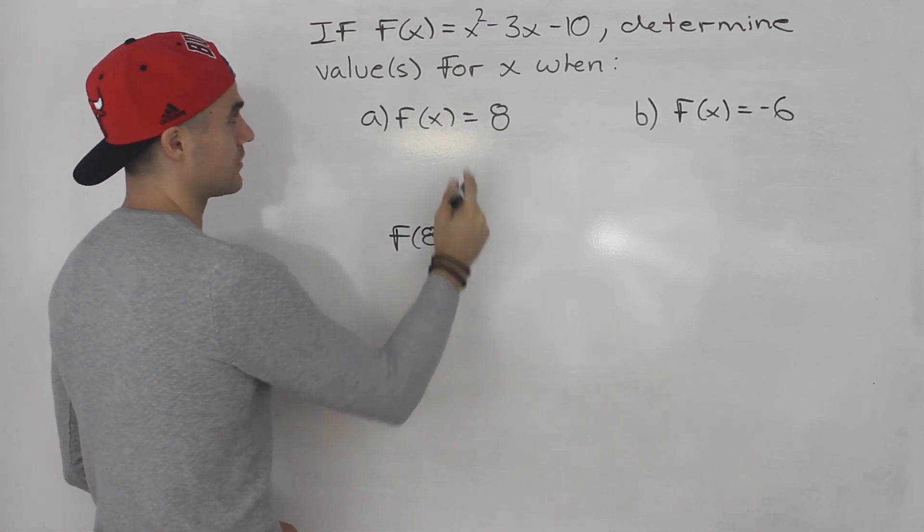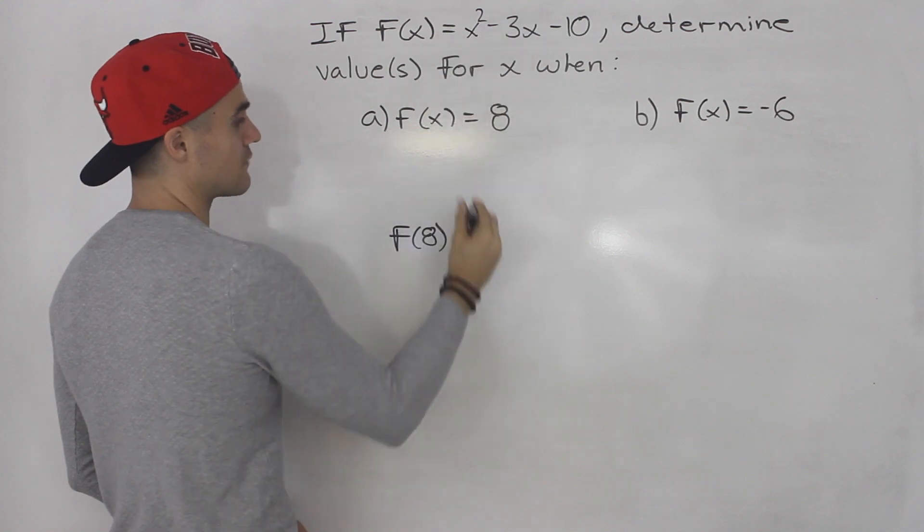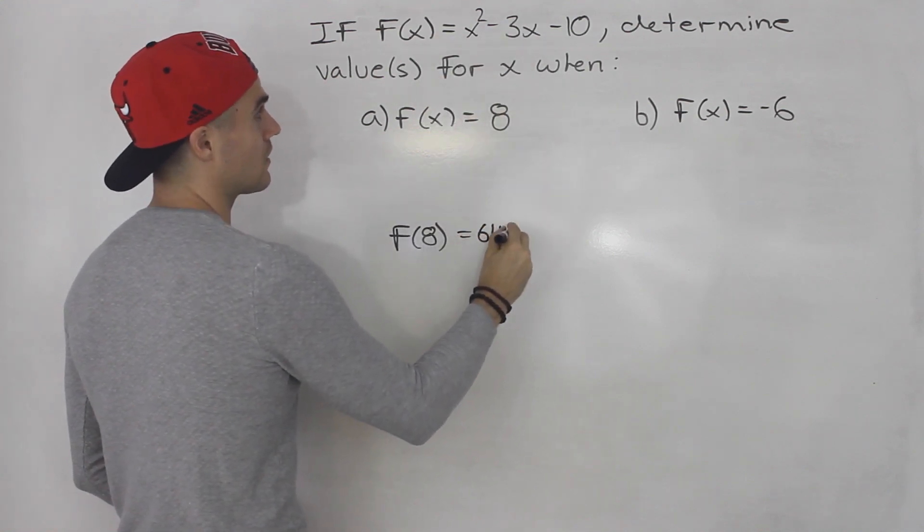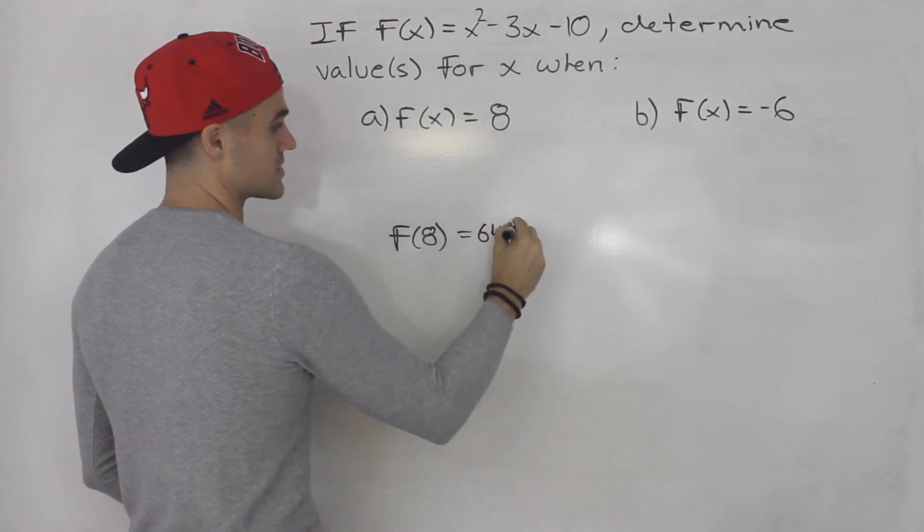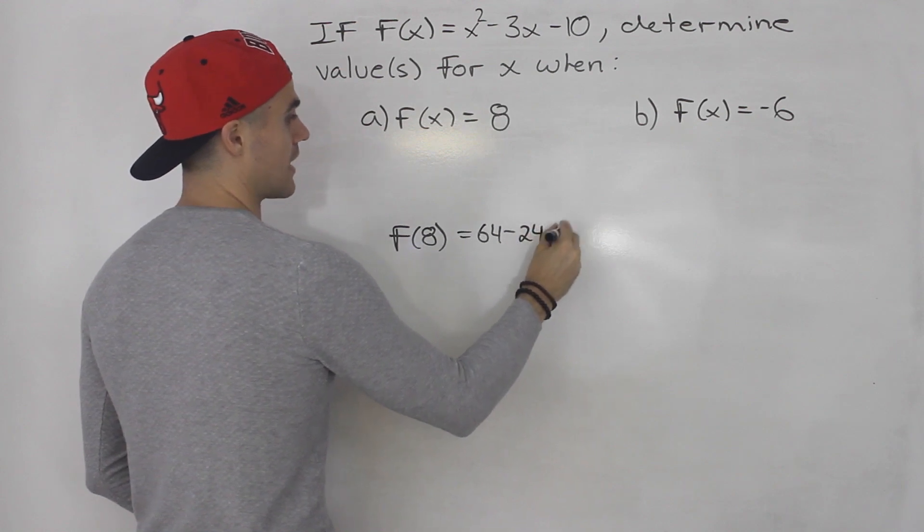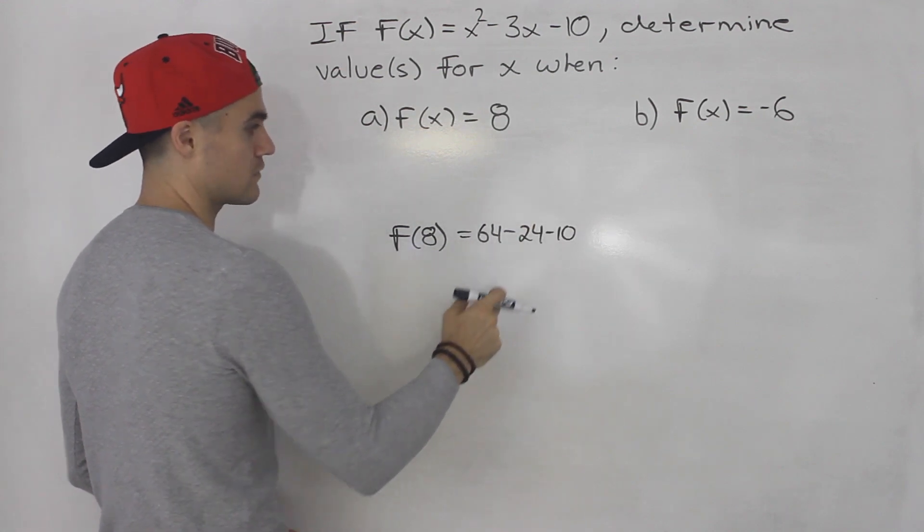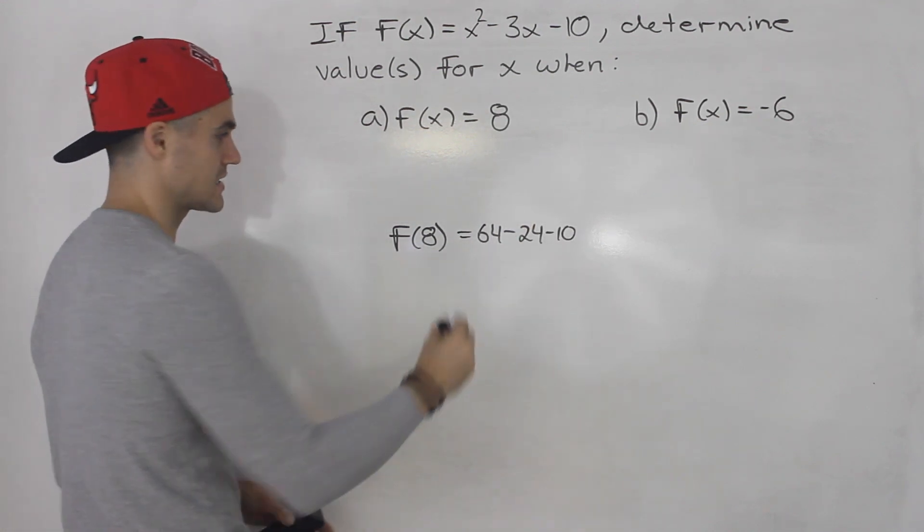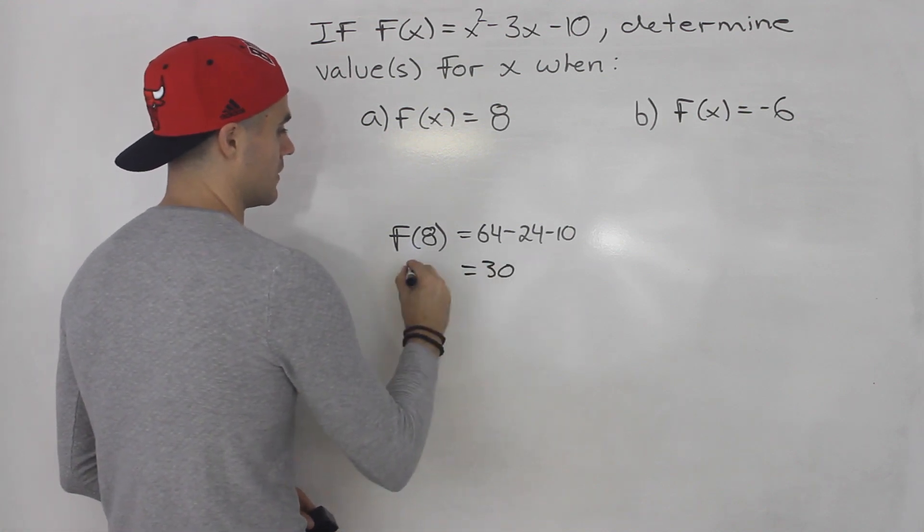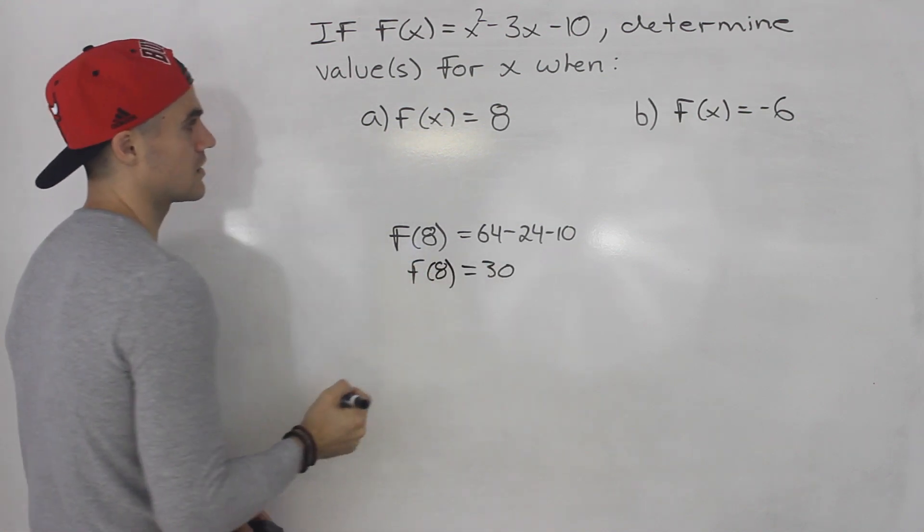In this case we would just plug in 8 for x. So we'd have 8² which is 64 minus 3 times 8 which is 24 minus 10. So this would be 64 minus 24 which is 40 minus 10 is 30. So f(8) would be 30.